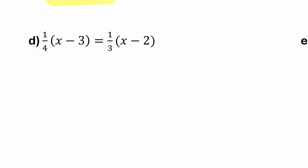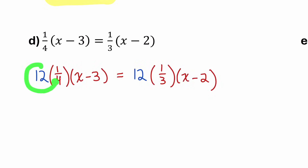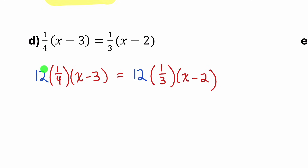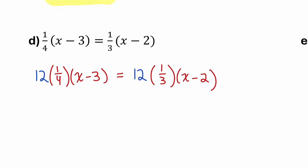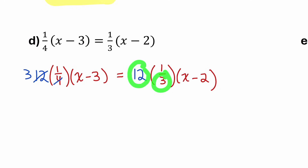The lowest common multiple of 4 and 3 is 12. So I'll multiply both sides of the equation by 12. Since we did it to both sides, the equation is still balanced. By multiplying both sides by a common multiple of 4 and 3, when dividing the twelves by both 4 and 3, we'll get whole number values, which will eliminate the fractions. 12 divided by 4 is 3, and 12 divided by 3 is 4.